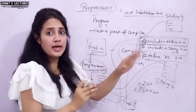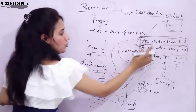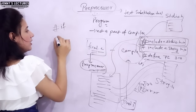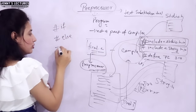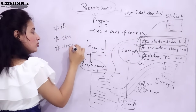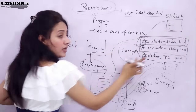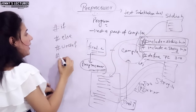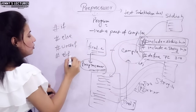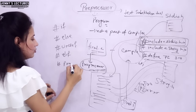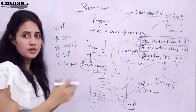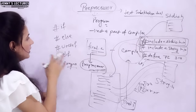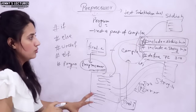Different preprocessor directives exist. Hash include is one. Hash define is another. Hash ifdef is there, hash else is also there. Hash undef is there - it is used to undefine a macro. Hash pragma is also there, which is used to give some special directive or special commands. These things will be discussed in separate videos.